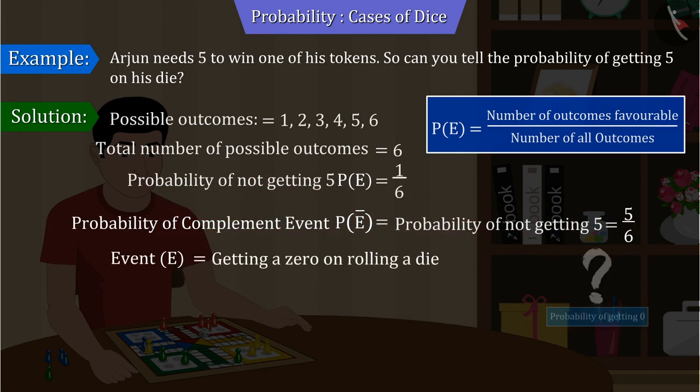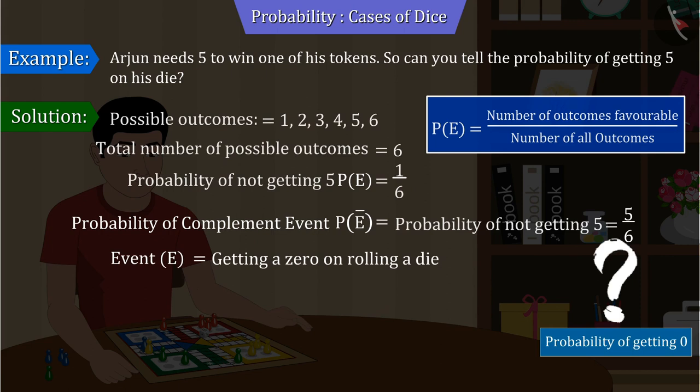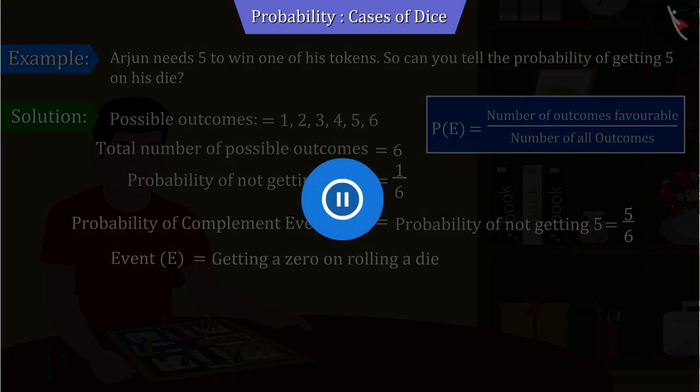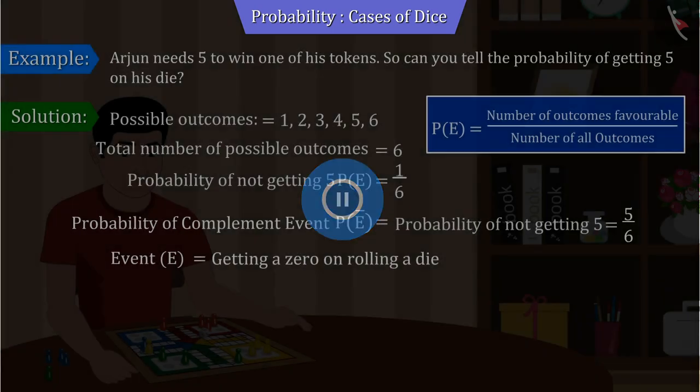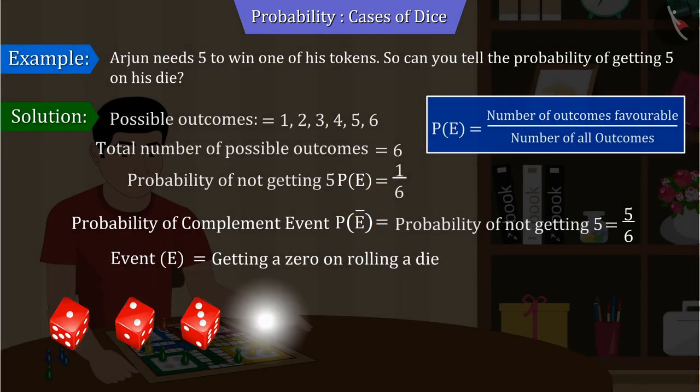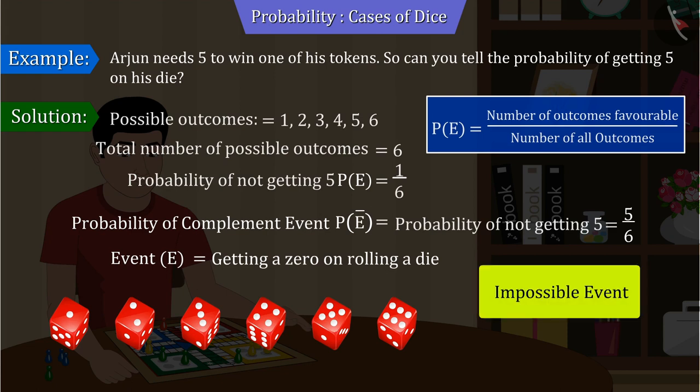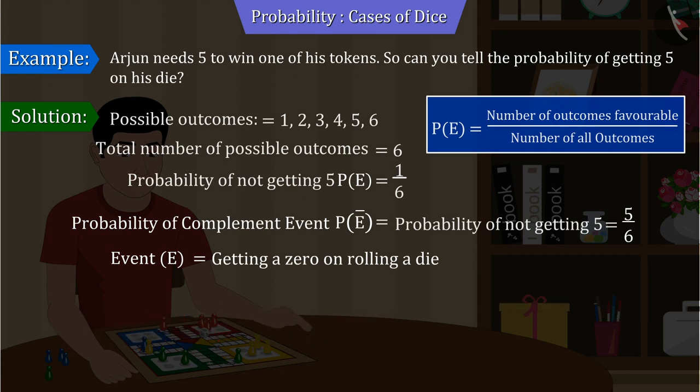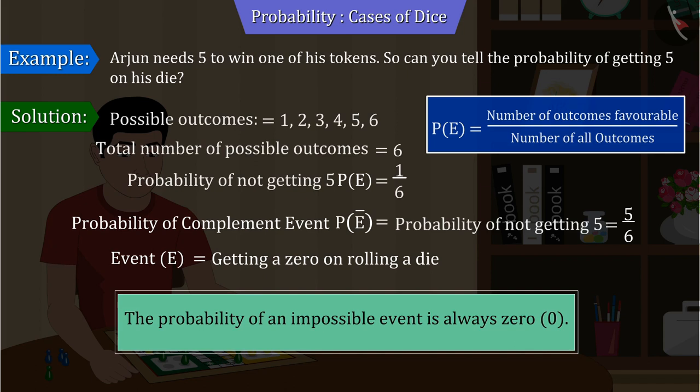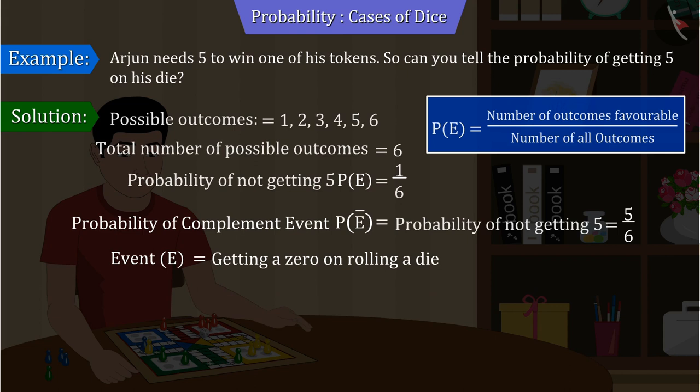Now, if you are asked the probability of getting a zero, what will you say? Pause the video and try it yourself. You can see that there is no zero on any of the faces of the dice. So getting a zero on the dice is an impossible event. And we know that the probability of an impossible event is always zero. Hence, the probability of getting a zero in this situation will also be zero.